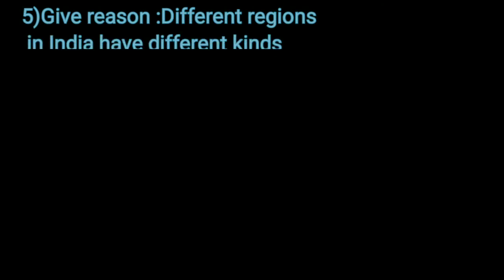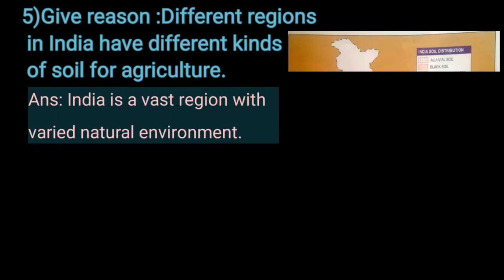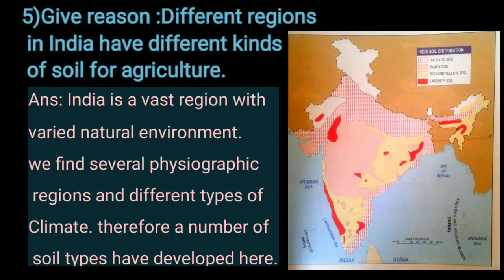Give reason: Different regions in India have different kinds of soil for agriculture. India is a vast region with a varied natural environment. We find several physiographic regions and different types of climate. Therefore, a number of soil types have developed here.